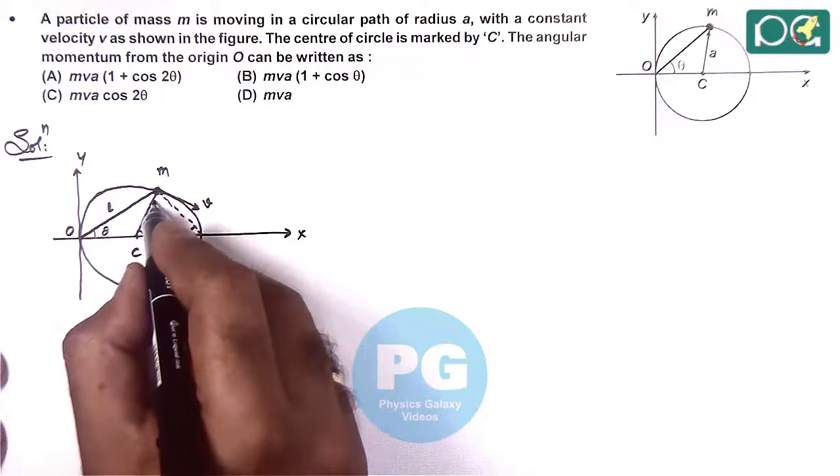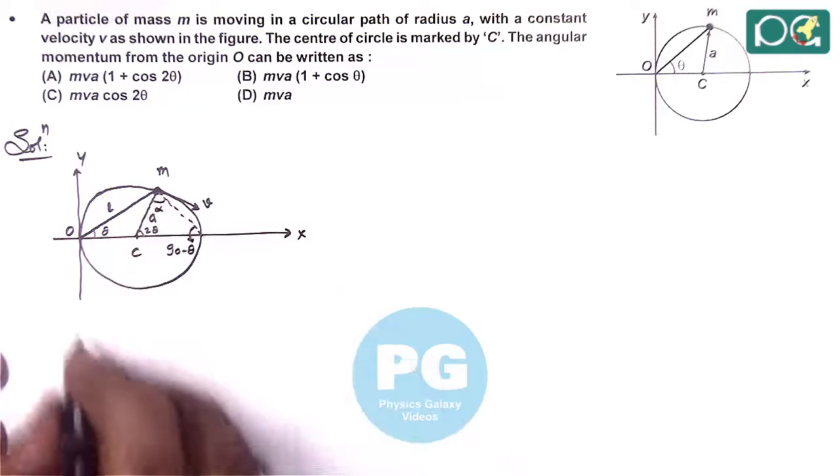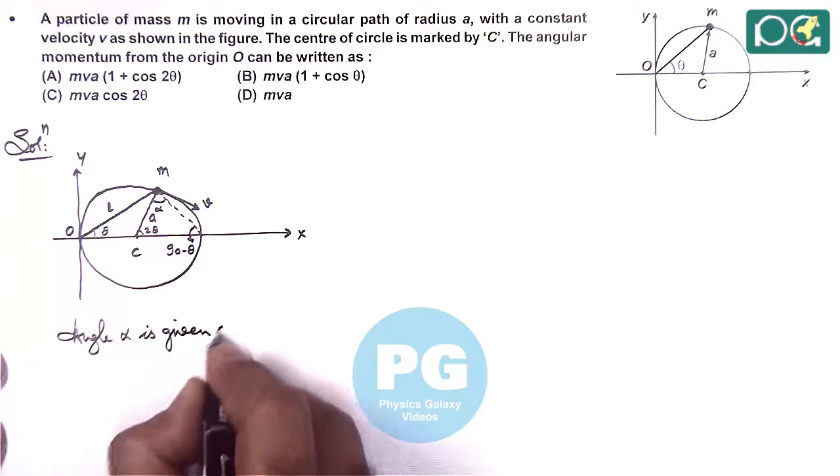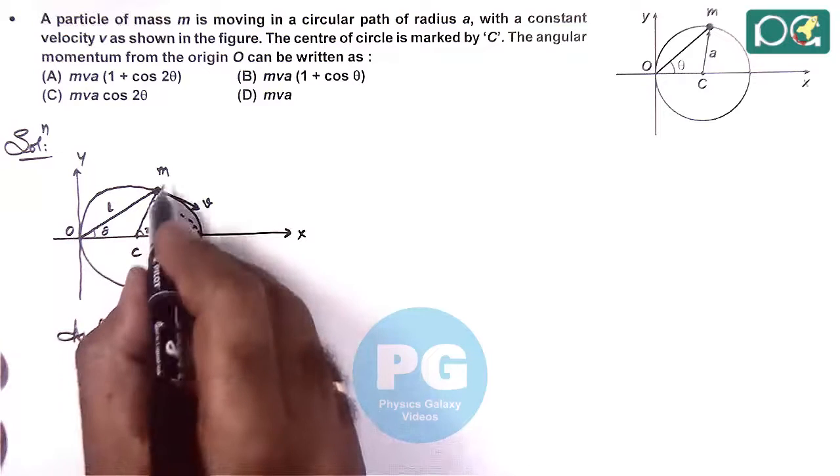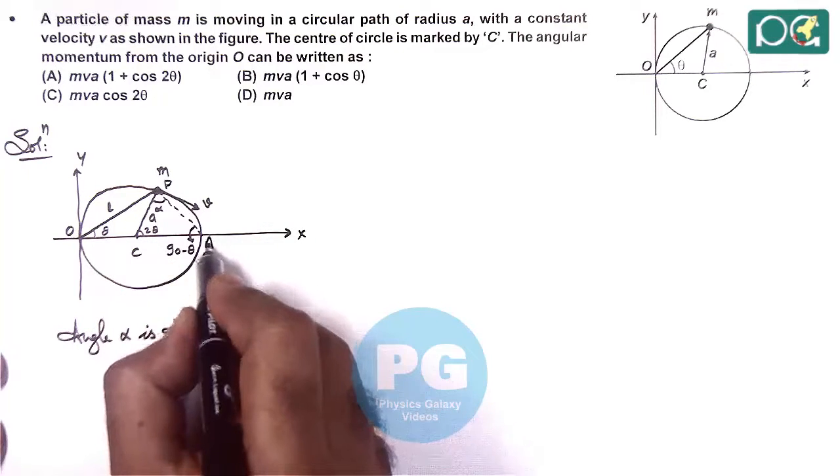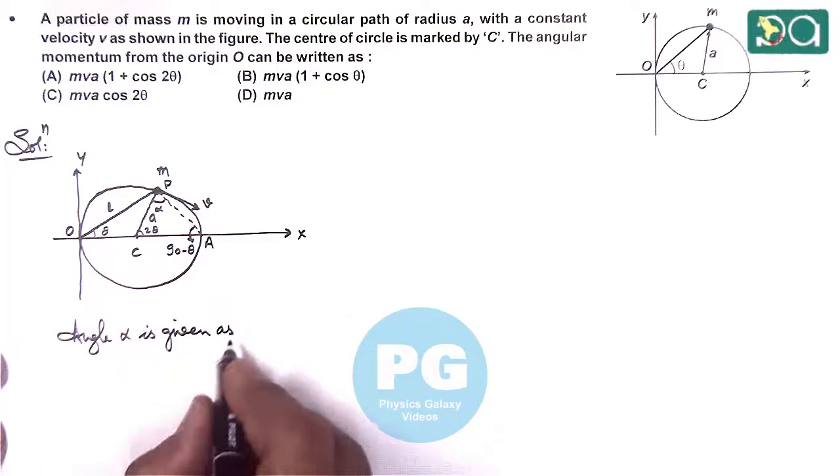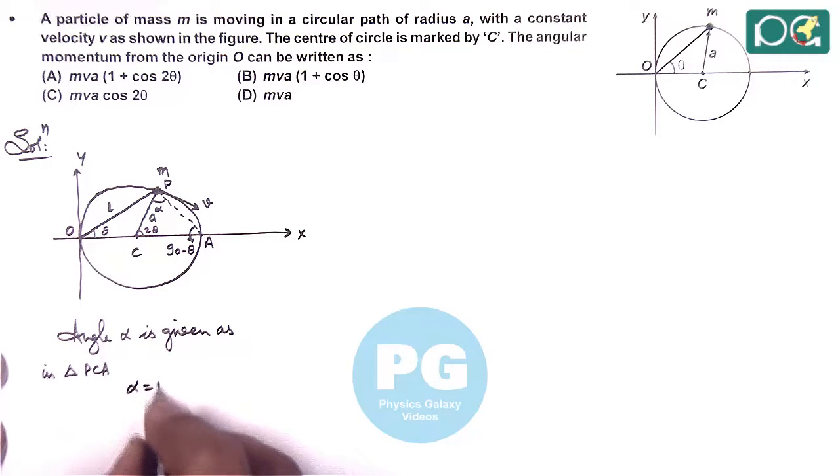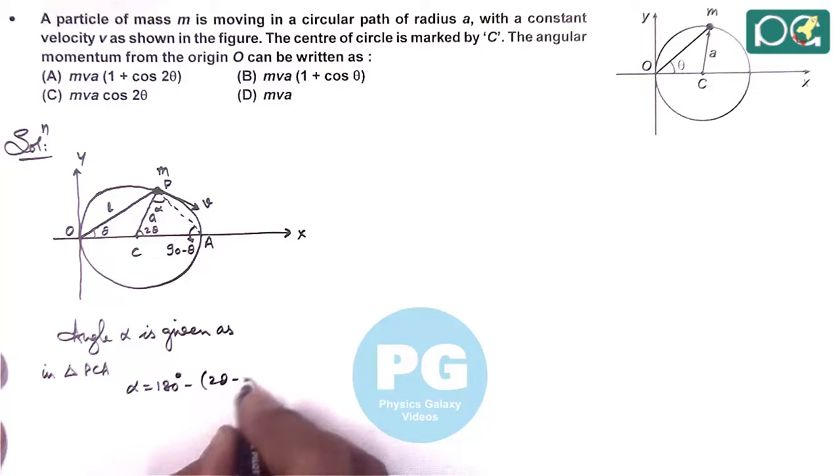So from here we get the value of this angle alpha. So here we can write angle alpha is given as, in this triangle, say if this mass M is at point P, this is C, this is A. Angle alpha is given as in triangle PCA, we have alpha is equal to 180 degree minus 2 theta minus 90 minus theta.